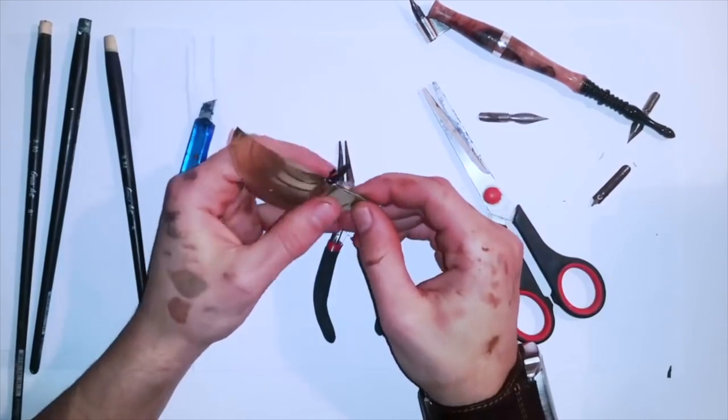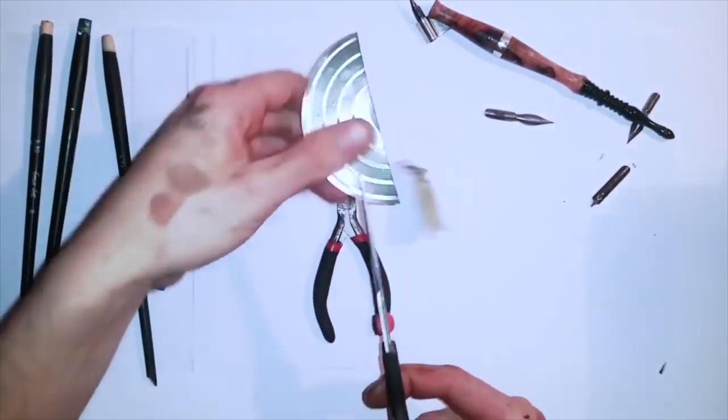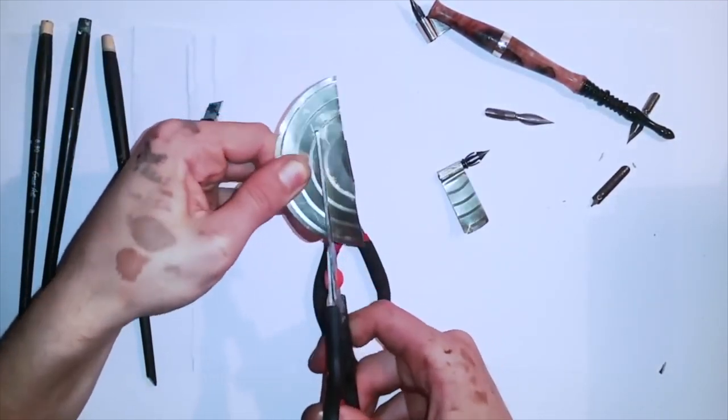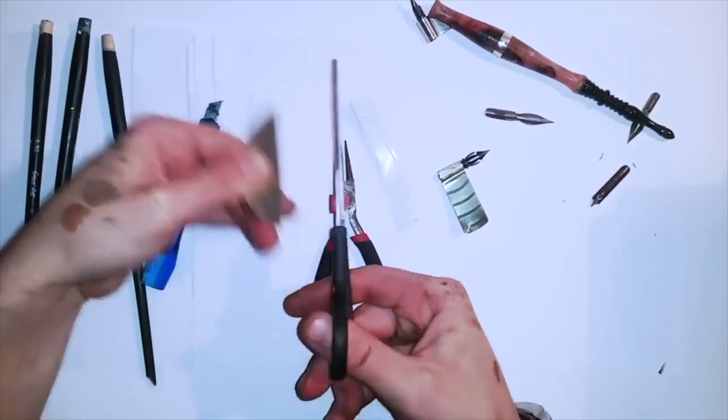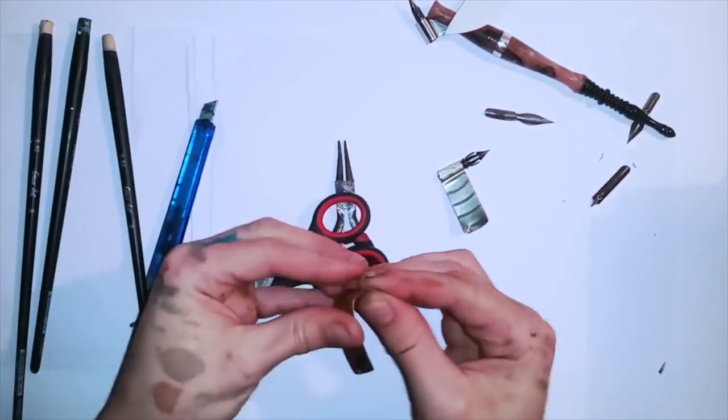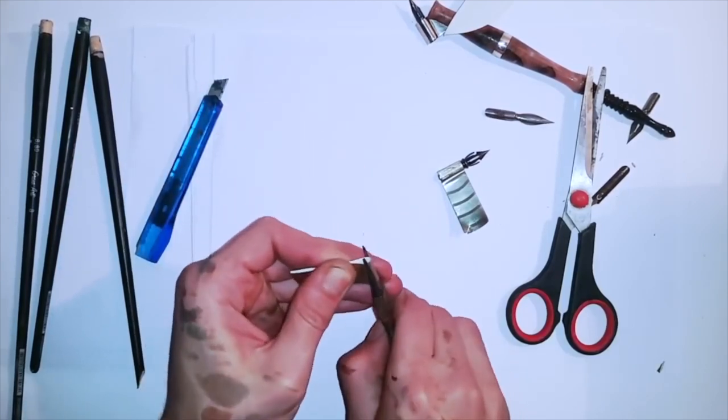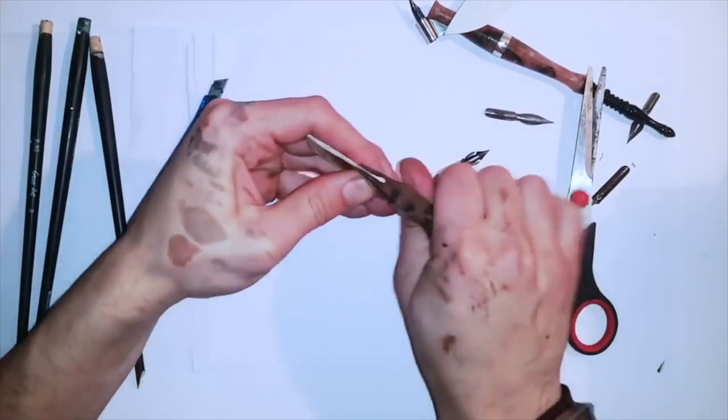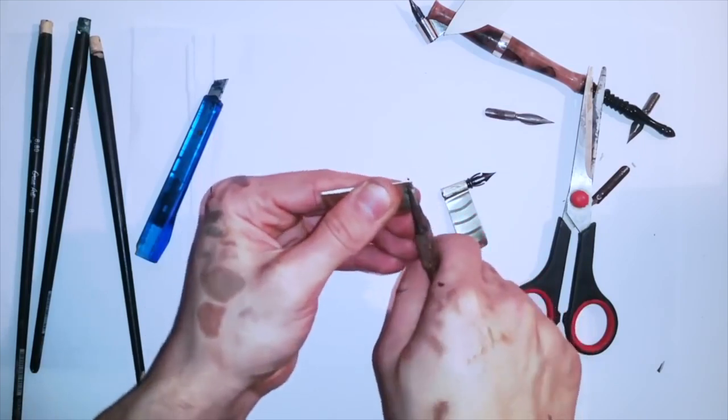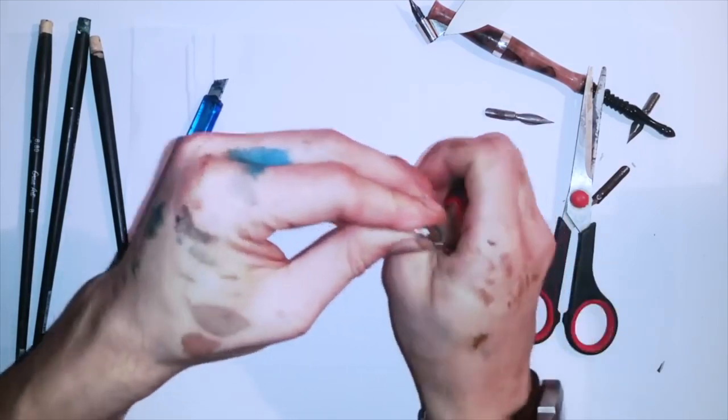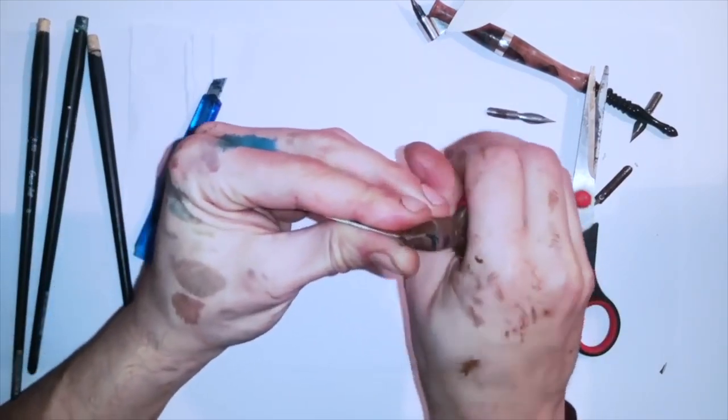I'm starting a second one. I'm gonna be making two oblique holders in this video. If you haven't seen something, you can double check now. It's a very easy do-it-yourself pen.